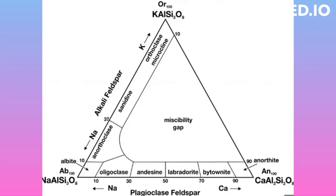At high temperatures there is complete solid solution in the alkali feldspars, wherein sodium ions and potassium ions are completely interchangeable in the feldspar structure. But upon cooling they split into two separate phases, where one is potassium rich and the other one is sodium rich.